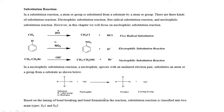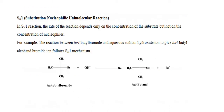Based on the timing of bond breaking and bond formation in the reaction, substitution reactions are of two types: SN1 reaction and SN2 reaction. Let us brief SN1 reaction. SN1 means: S = substitution, N = nucleophilic, 1 = unimolecular. So it is known as substitution nucleophilic unimolecular reaction.